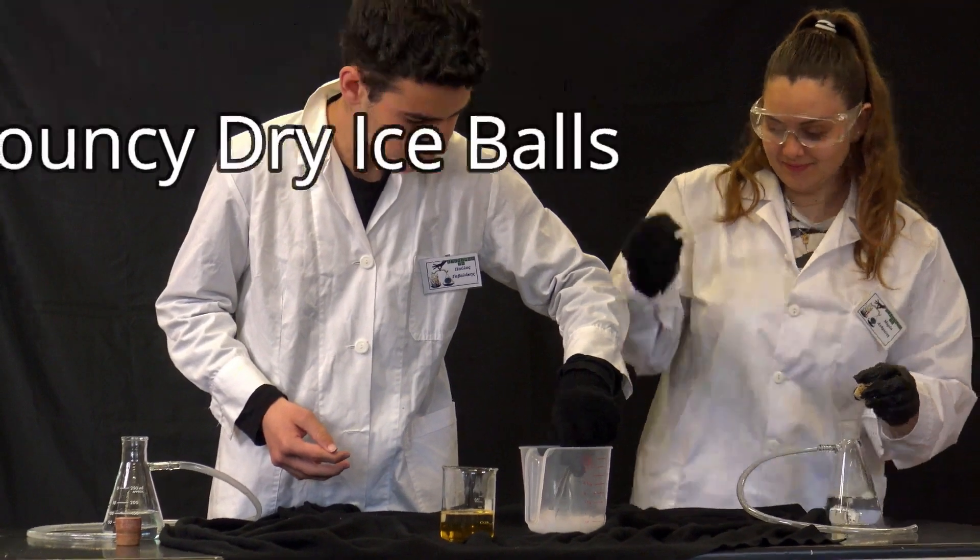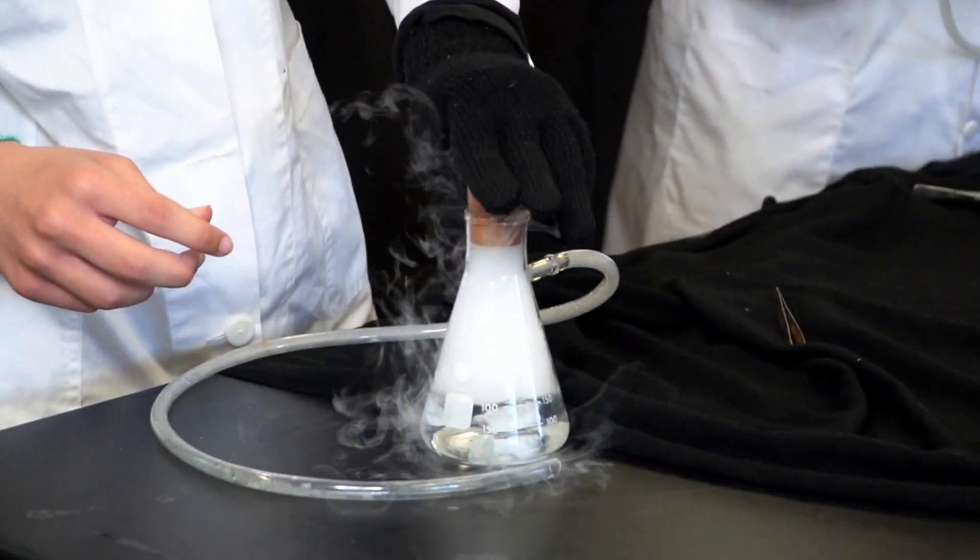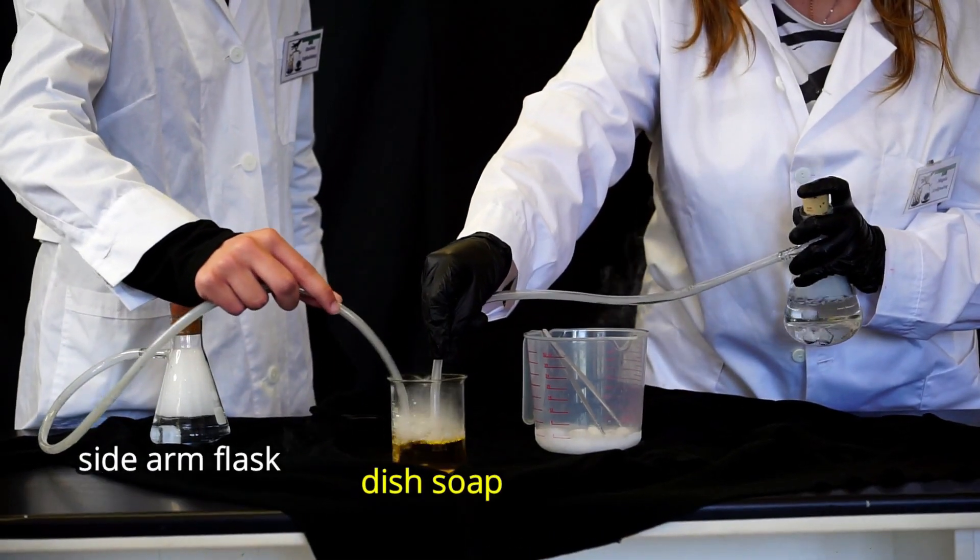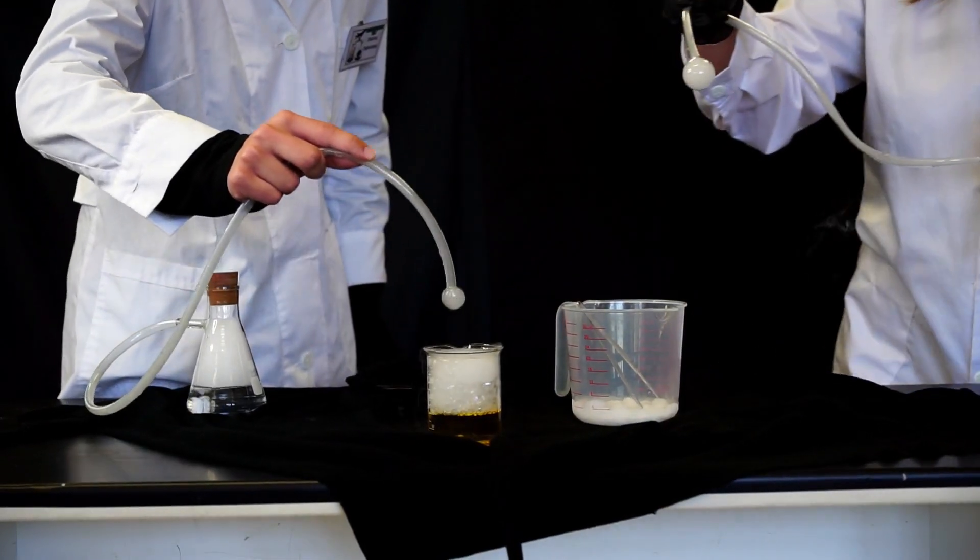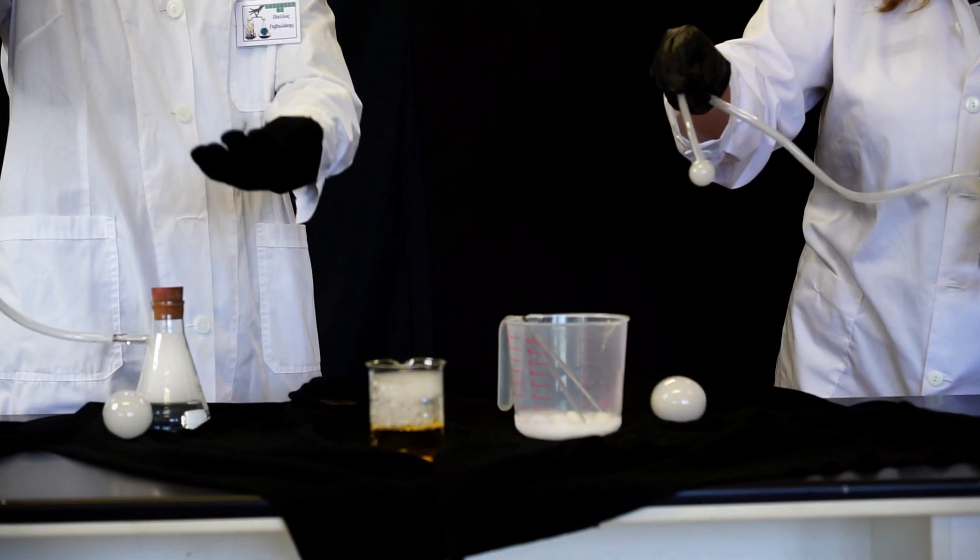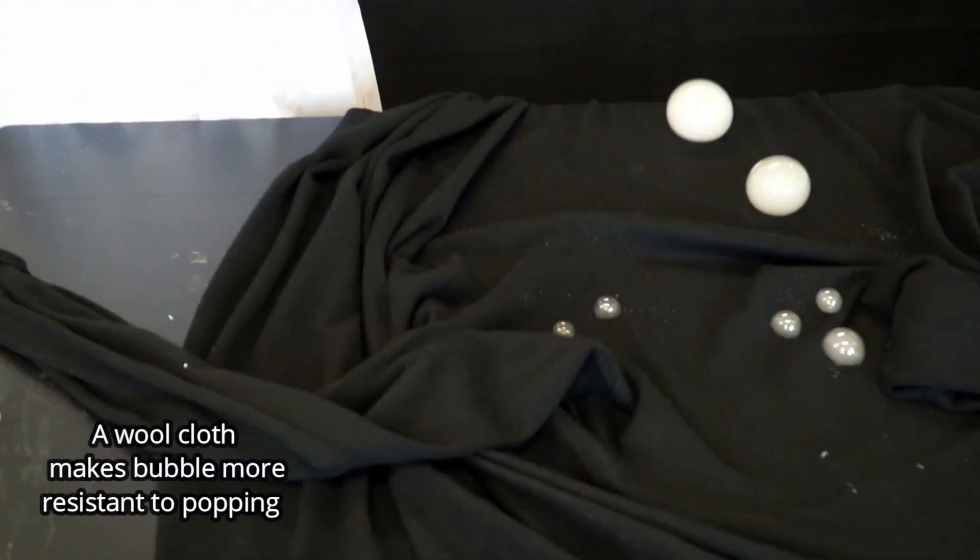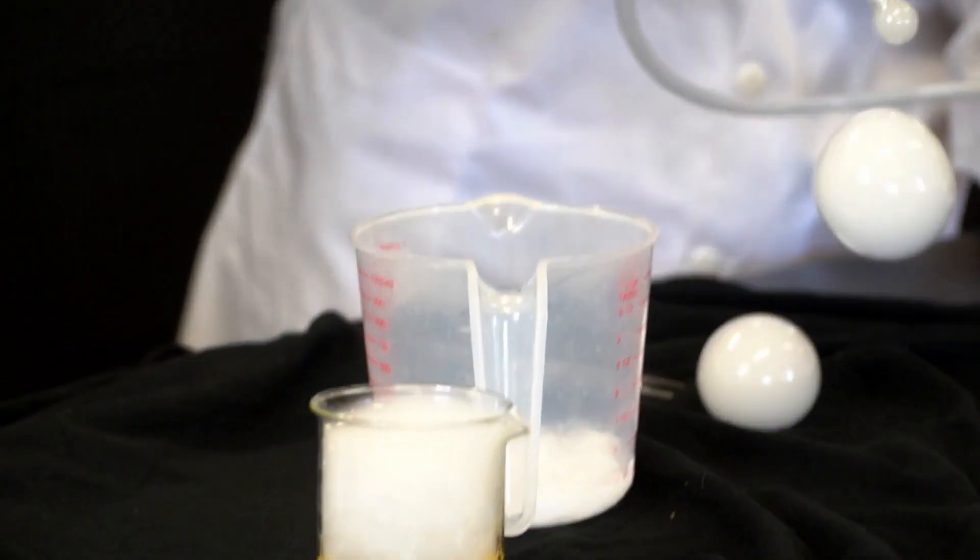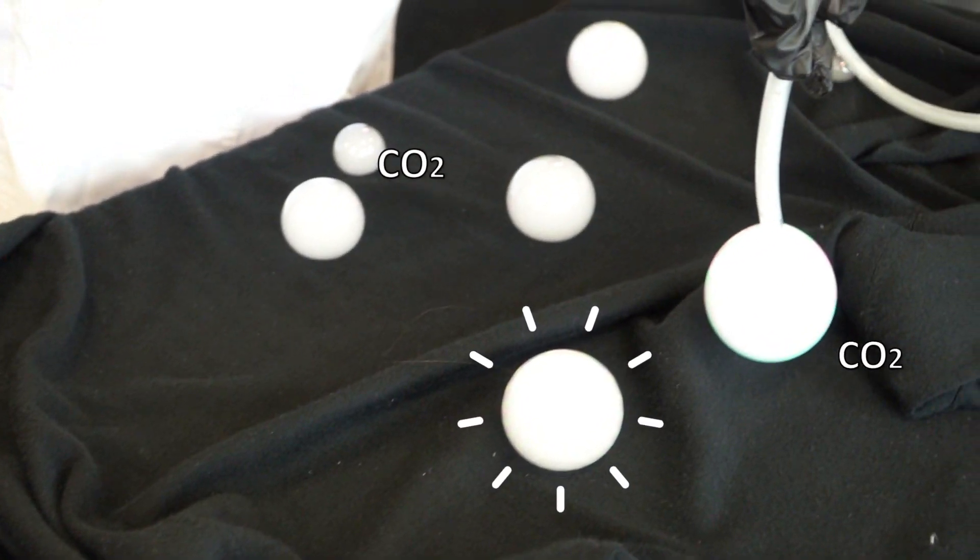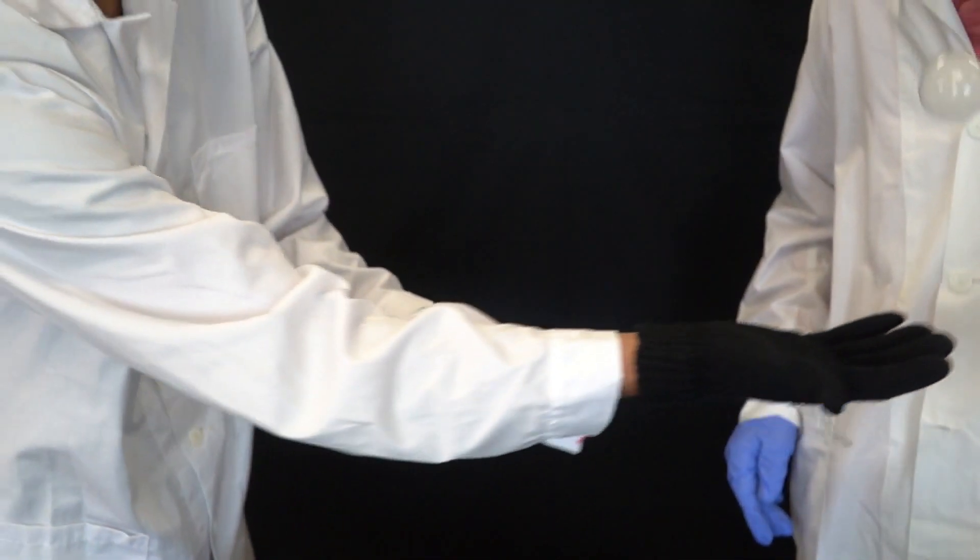In this experiment a piece of dry ice sublimes to CO2 gas which is conveyed to a kitchen soap solution. The higher pressure inside the flask forces the formation of a dry ice bubble. These bubbles are very bouncy cause they are more stable compared to typical soap ones. Moreover CO2 partially diffuses across the bubble soap film and therefore the bubble gradually decreases in size.